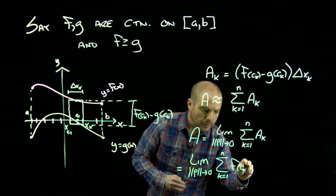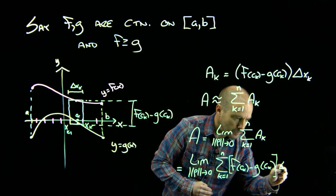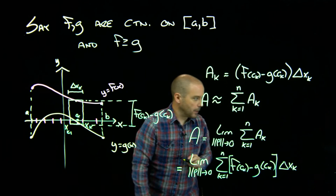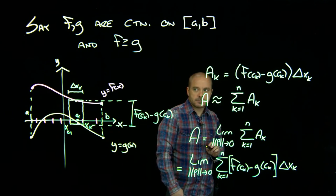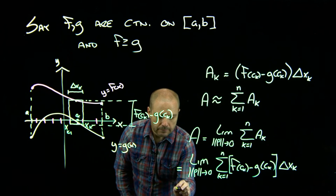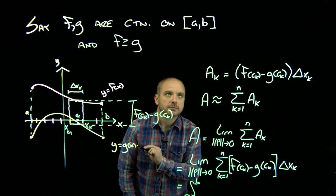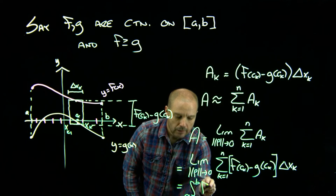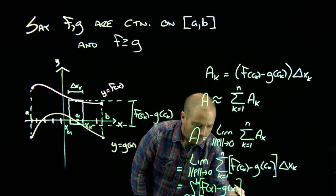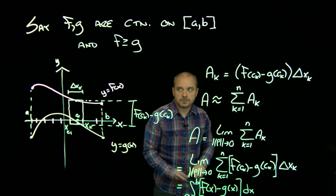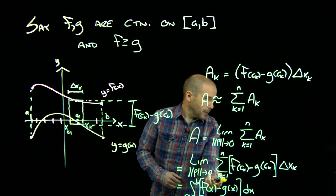F of c sub k minus g at c sub k times delta x sub k. That then is our integral from a to b of f of x minus g of x dx. And this is only true if f is bigger than g.